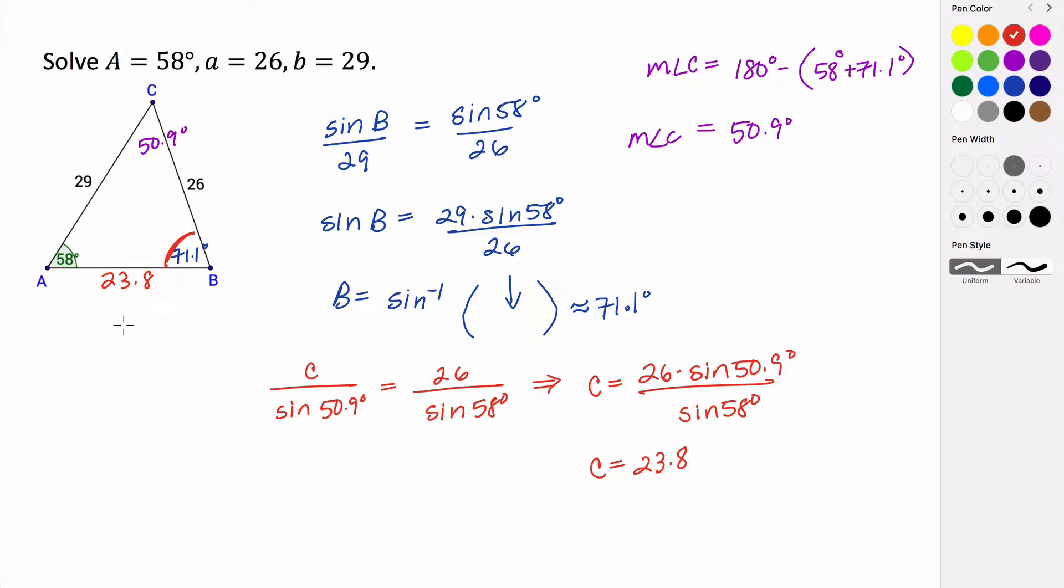Alright, so in the last video we found that this information gave us potentially two triangles, and so this was the ambiguous case. We went through and solved our first triangle, which gave us B as an acute angle measure.